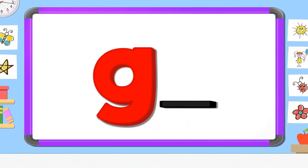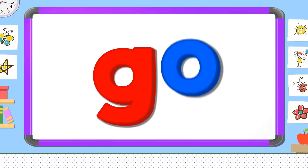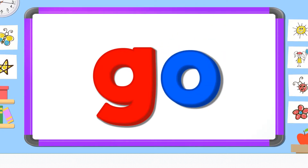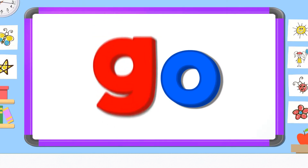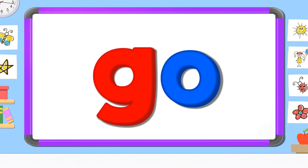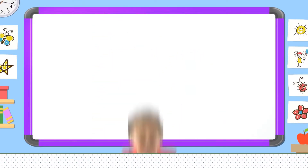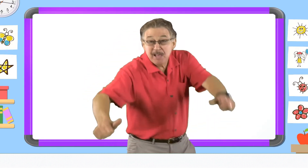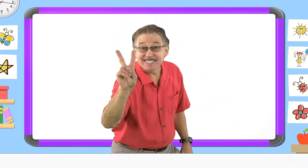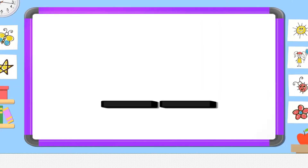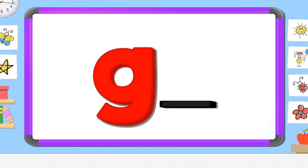Say it before I do. O. G. Now look carefully and tell me the two missing letters: G, O.